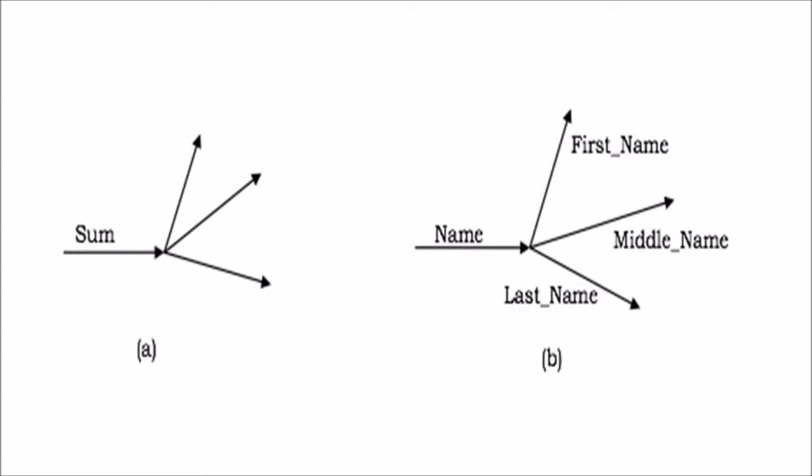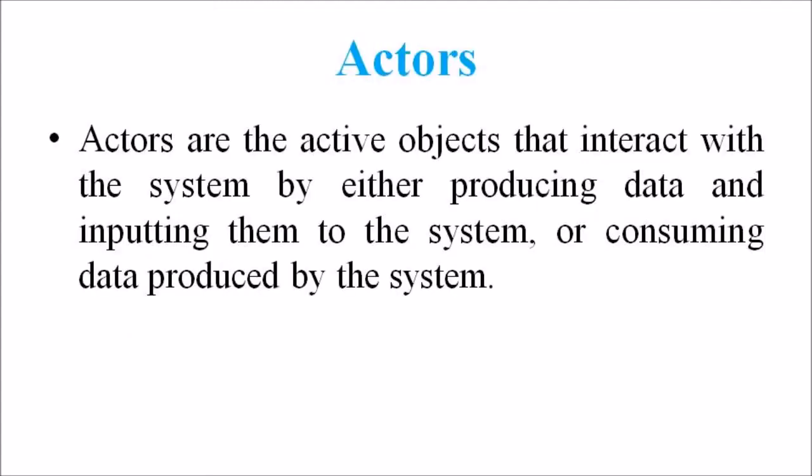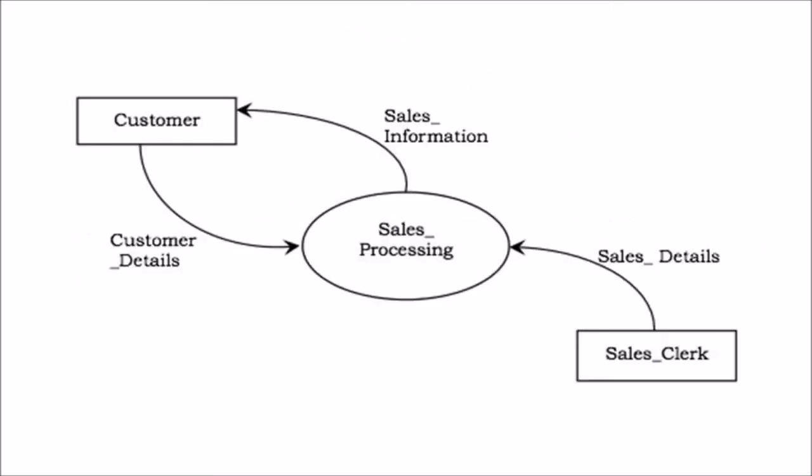When it comes to the term actor, actors are the active objects that interact with the system by either producing data and inputting them to the system, or consuming data produced by the system. In other words, actors serve as the source and the sink of data. In the data flow diagrams, actors are represented by a rectangle. Actors are connected to the input and output and lie on the boundaries of the data flow diagrams. For example, in this figure, the different actors are customer and sales clerk, where each of these actors are represented at the boundary of the data flow diagram.